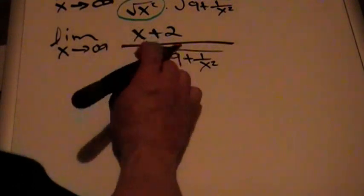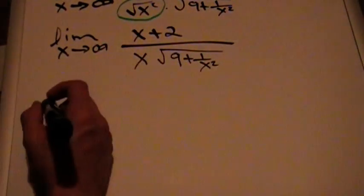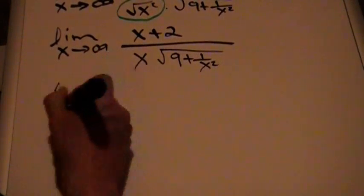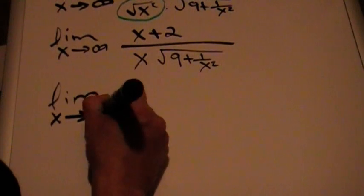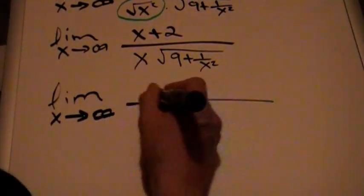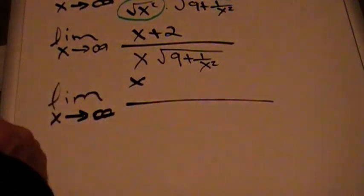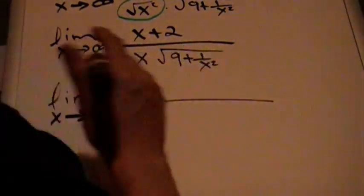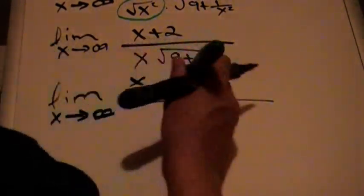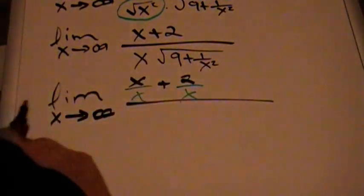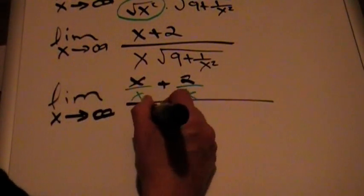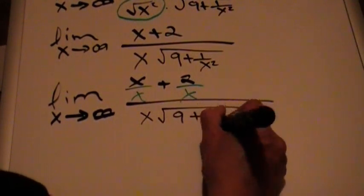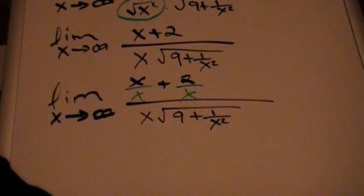Now I'm going to divide the top and bottom by x. So I'm going to divide x by x, plus 2 divided by x, all over x times √(9 + 1/x²) divided by x.